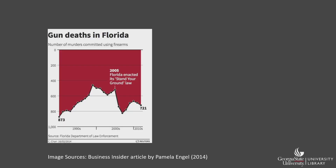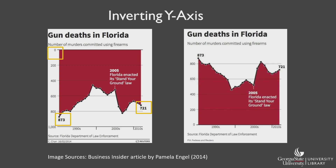This next chart has become infamous for its misleading visualization. The chart is supposed to demonstrate the number of gun deaths that have occurred in Florida over time, while bringing attention to how gun deaths have changed since Florida enacted its Stand Your Ground Law in 2005. Based on a first glance, it looks like gun deaths have decreased since the line is going down. However, if we take a closer look at the y-axis, we see that it has been inverted, with zero at the top and 1,000 at the bottom. Another author recreated the graph with a normal y-axis, making it much easier to see that gun deaths in Florida have actually increased since the enactment of the Stand Your Ground Law.